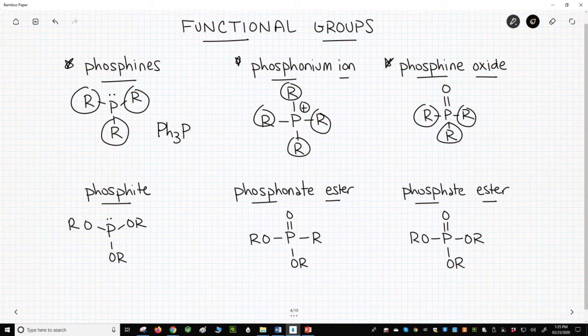Now on the bottom row to the left, something like a phosphene is a similar structure with three alkoxy or OR groups on phosphorus. This is called a phosphite.